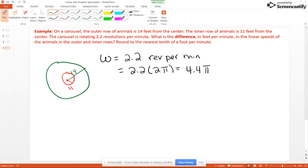And what we want to do is, what is the difference in feet per minute in the linear speeds of the animals in the outer and inner rows? Round to the tenth of a foot per minute.